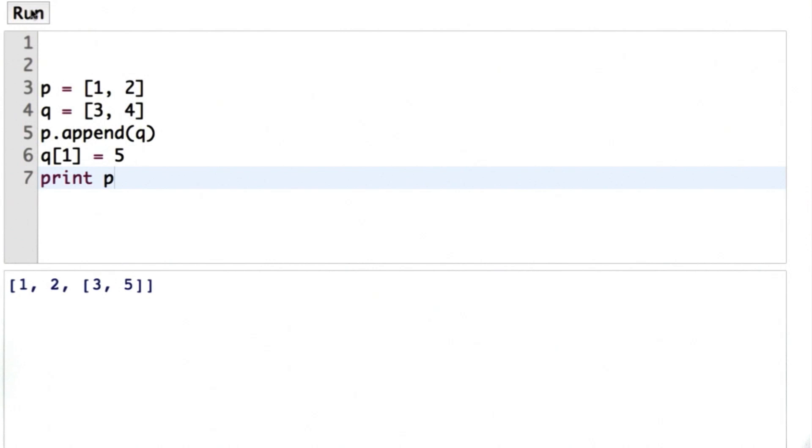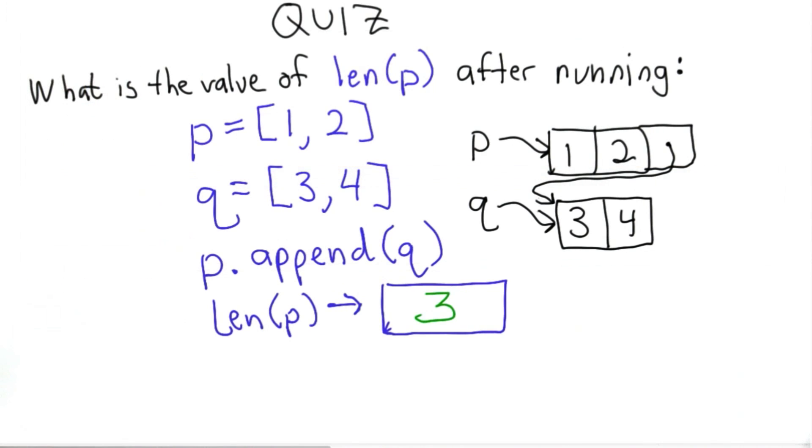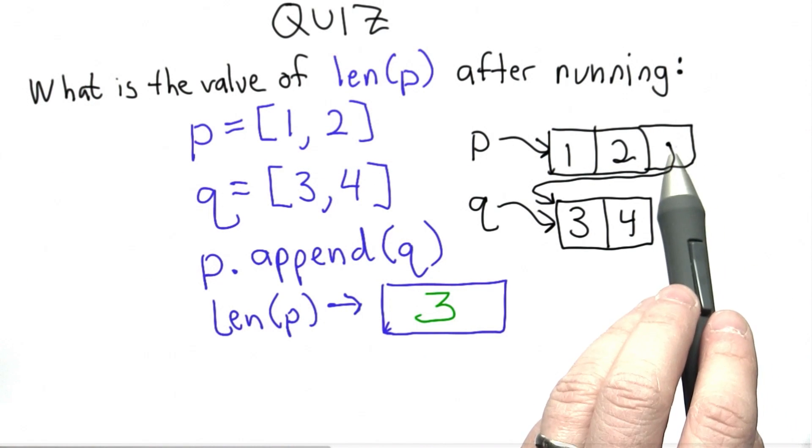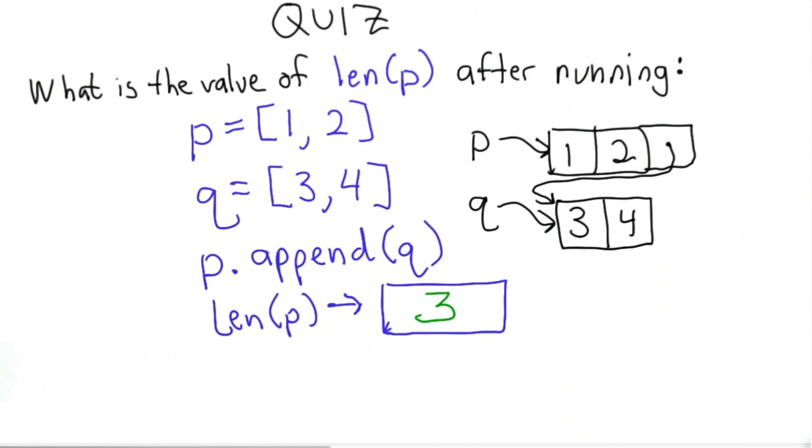It does. And if you remember the picture we drew, it's not surprising that it does. Remember that the object that we created, the third element of p, is actually a reference to this object containing the element 3, 4, which is the same list object that q references.